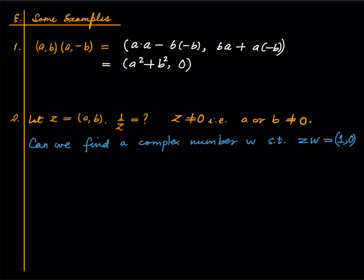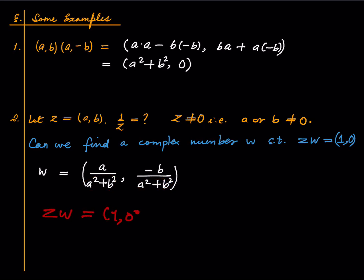We can indeed find such a complex number. Define W as (a divided by (a squared plus b squared)) comma (minus b divided by (a squared plus b squared)). This is legitimate because a squared plus b squared is a non-zero real number. If you compute ZW you will get 1 comma 0. The computation is essentially the same as the earlier example with the square of the modulus cancelling things out. So you can invert every non-zero complex number, again just like real numbers.